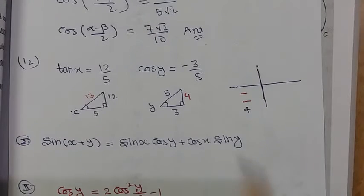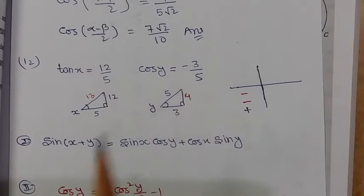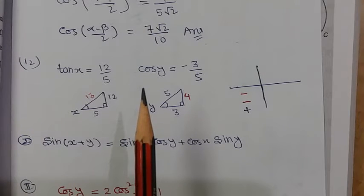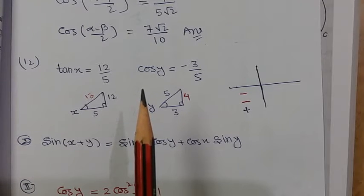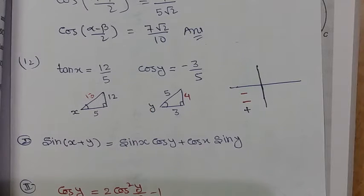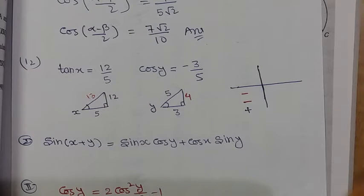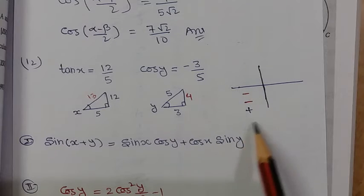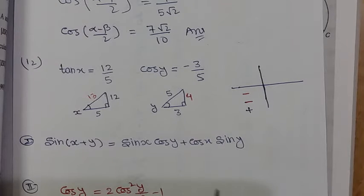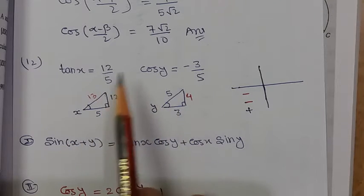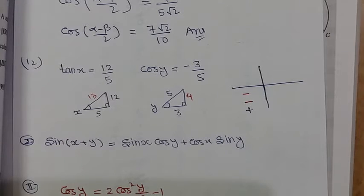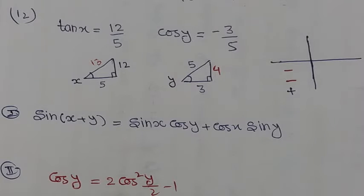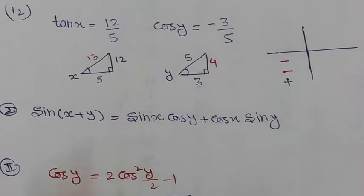Question number 12: tan x is equal to 12 upon 5 and cos y is equal to minus 3 upon 5, with x and y in the same quadrant. The value of tan is positive and cos is negative. When tan is positive and cos is negative, it will be in the third quadrant. So both x and y are in the third quadrant, though the question doesn't say it explicitly — the condition gives us this result.